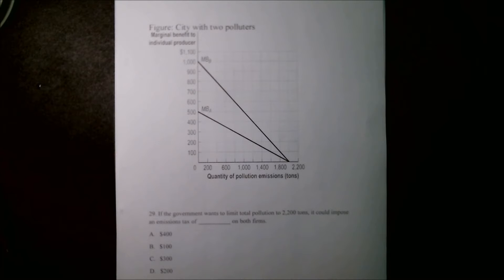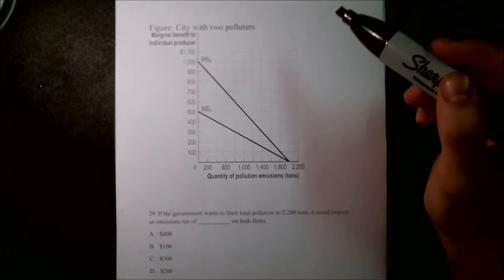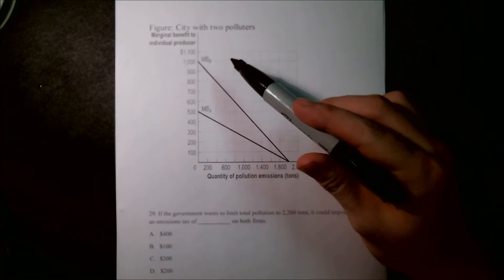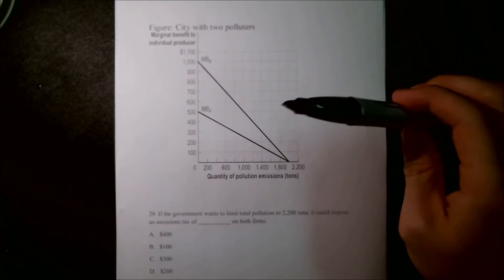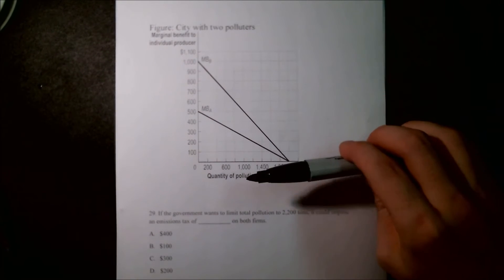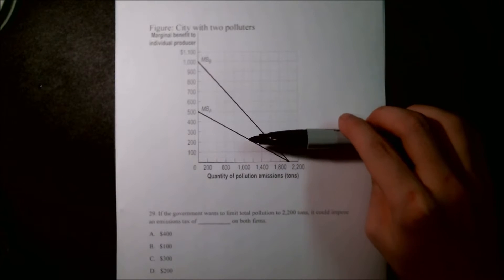Since we can assume these firms are trying to maximize their benefit, we know that they're going to want to produce to the point where their marginal benefit equals zero. So what we're effectively trying to do with an emissions tax is raise that zero level of benefit higher than it was before.